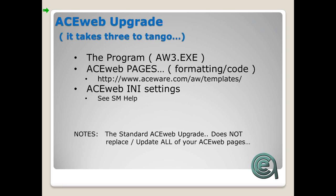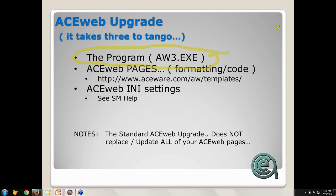The ACEweb upgrade — in terms of the difference between an ACEweb upgrade and a Student Manager upgrade — is that in Student Manager there is only one program you have to deal with: just the new SM8 executable you put in, and the upgrade is there. In ACEweb, you've really got three parts that all work together.